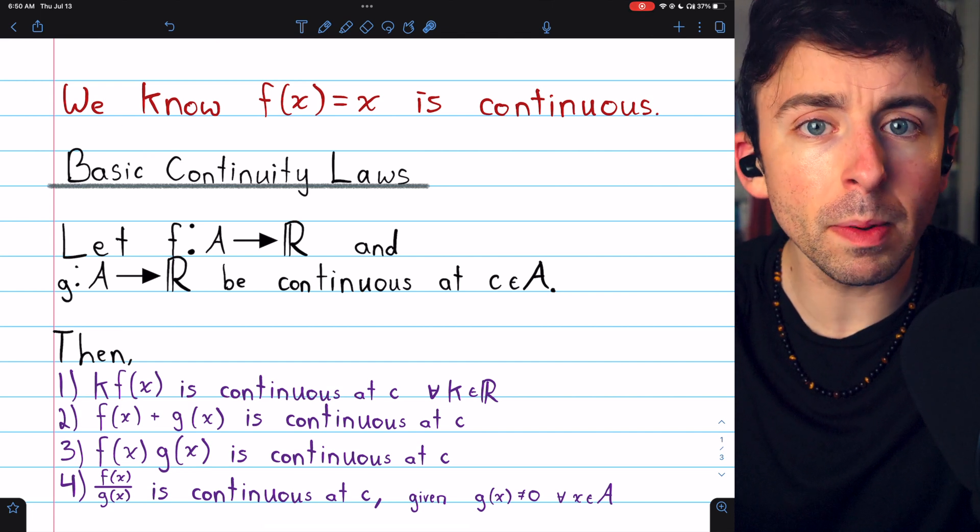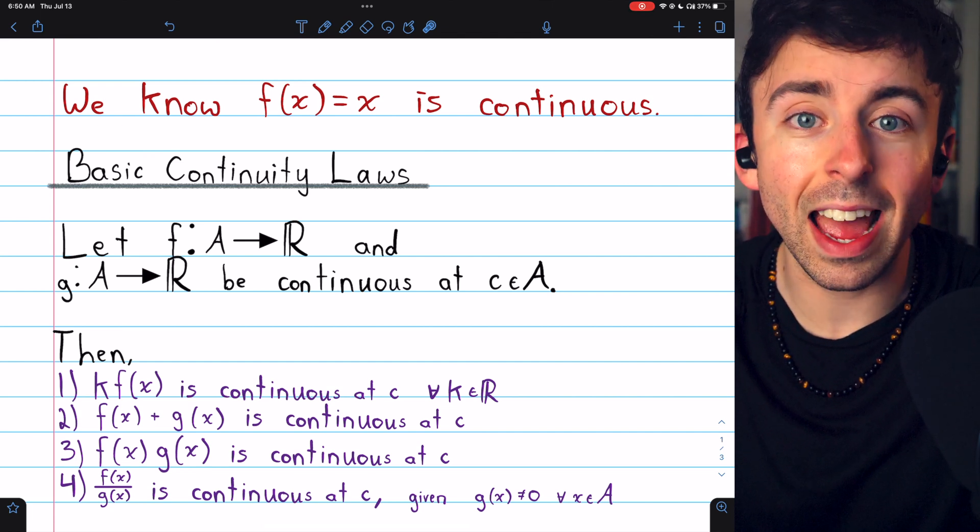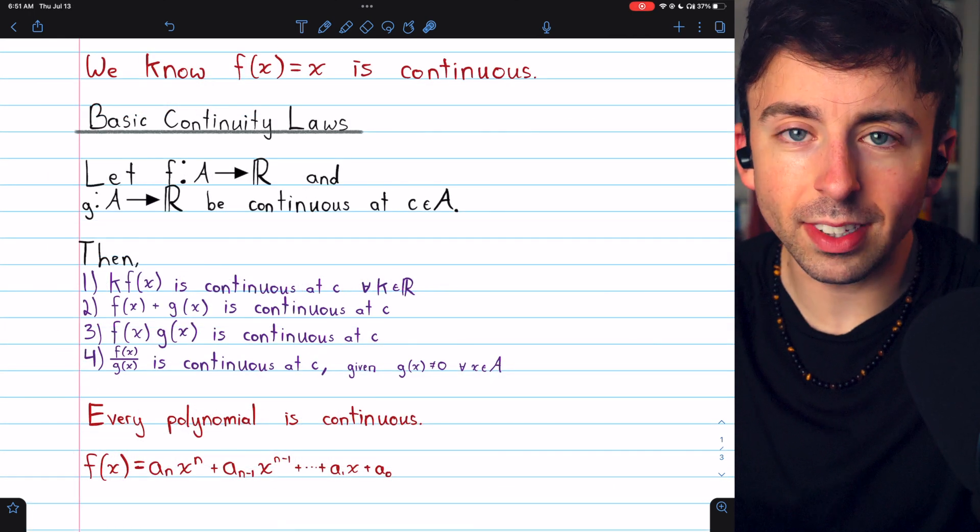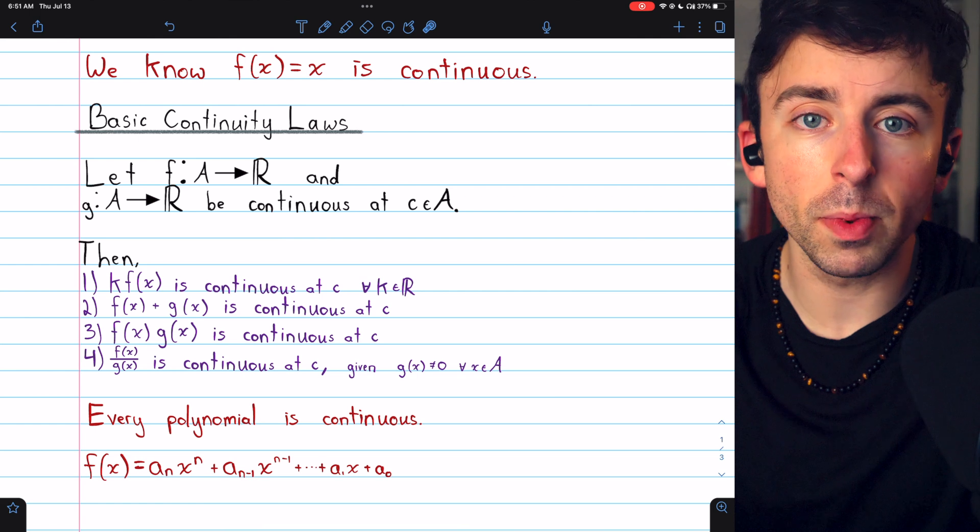Today we'll look at that result a little bit more in depth and also see that every rational function is continuous. So how do these results guarantee us that every polynomial is continuous?